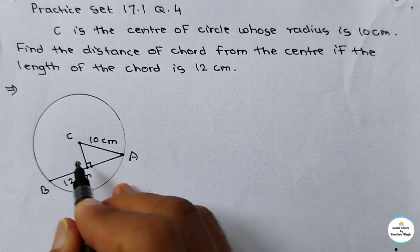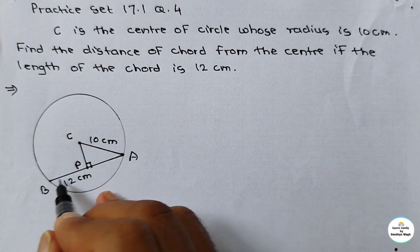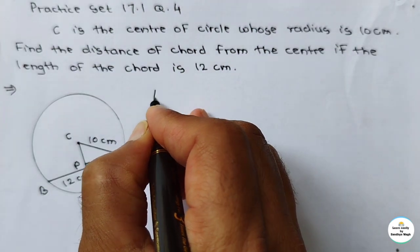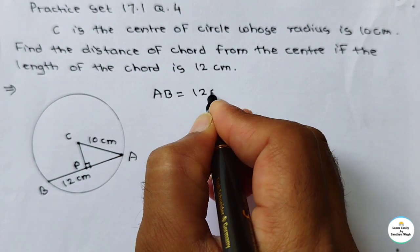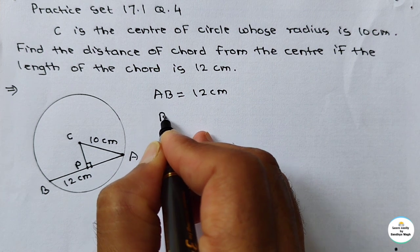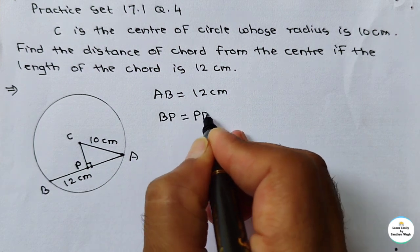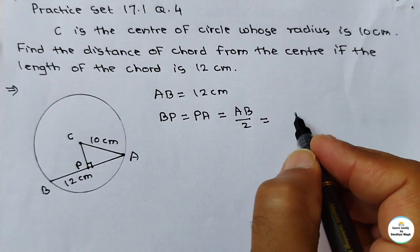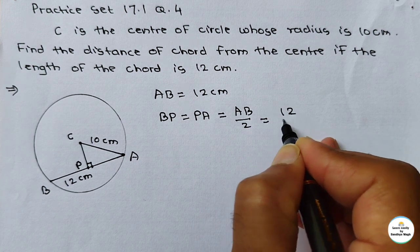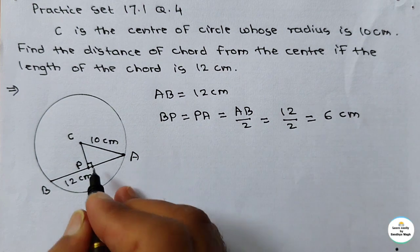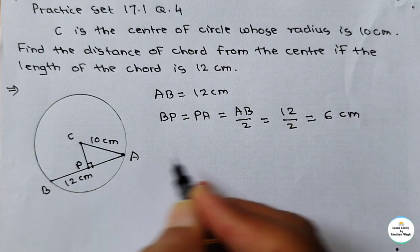So PB equals PA equals AB divided by 2. AB is given as 12 cm, so 12 divided by 2 gives us 6 cm. So the length PA and PB is 6 cm.